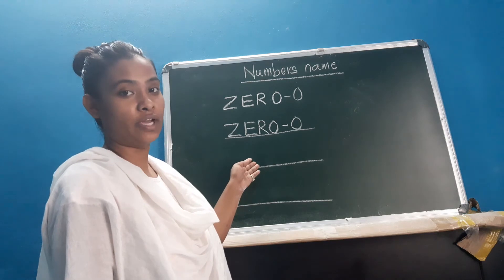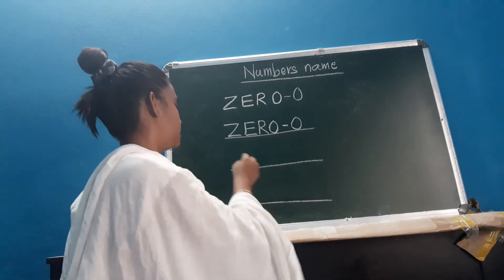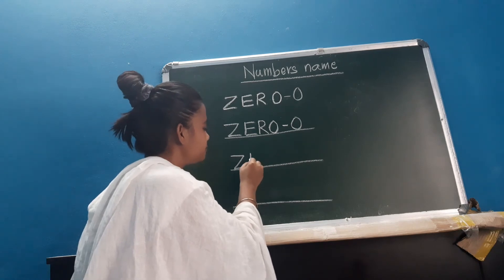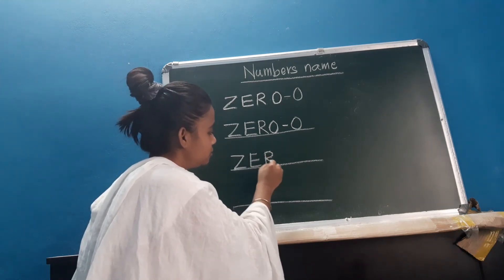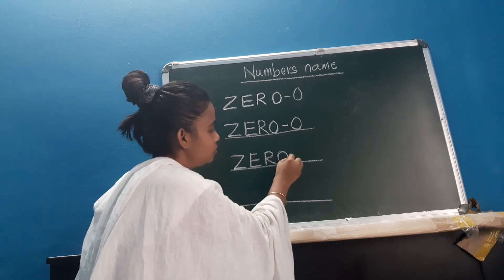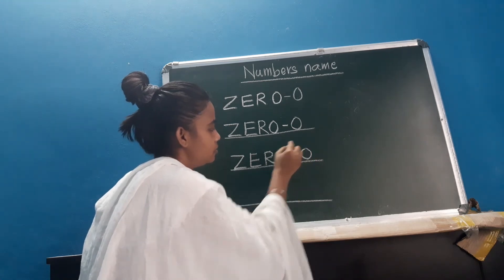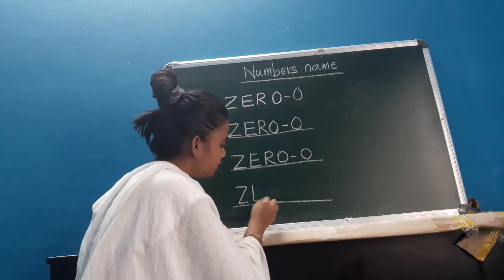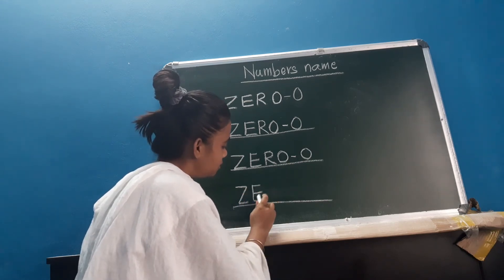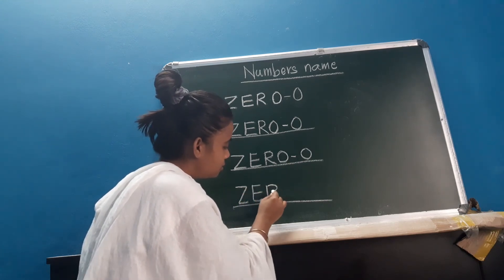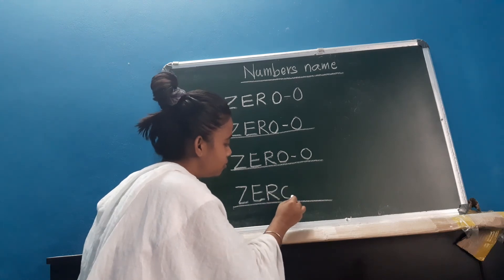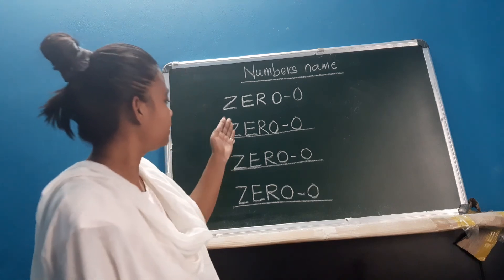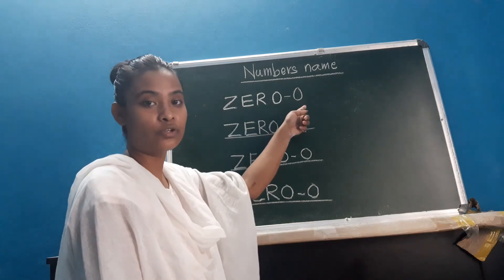And same thing you have to write here as well. You have to fill the blanks. Z-E-R-O. Zero. And the last one. Z-E-R-O. Zero. Like this. So this is the spelling of 0.